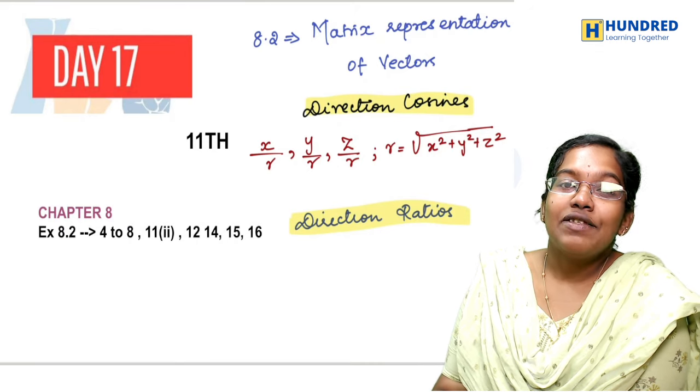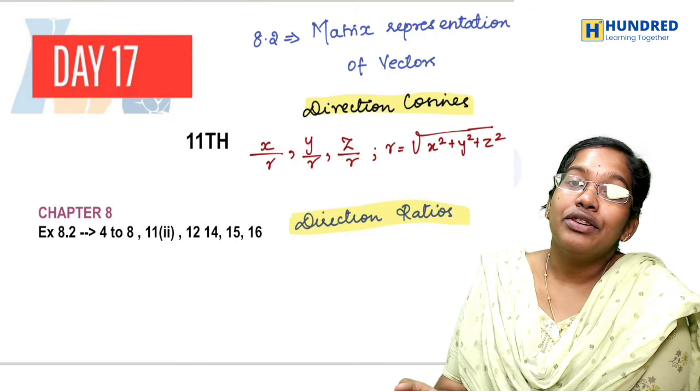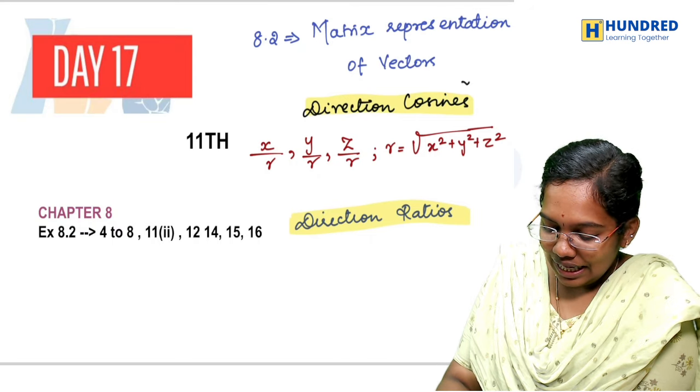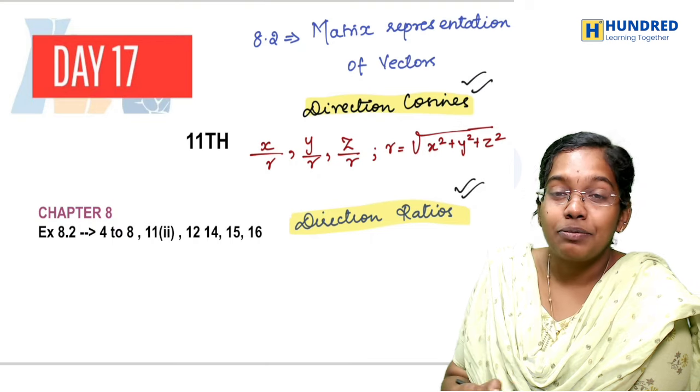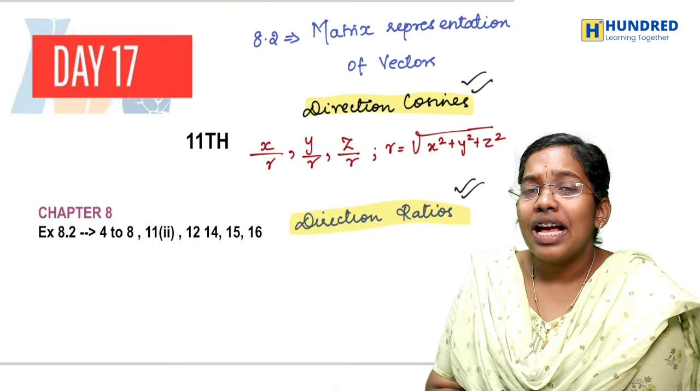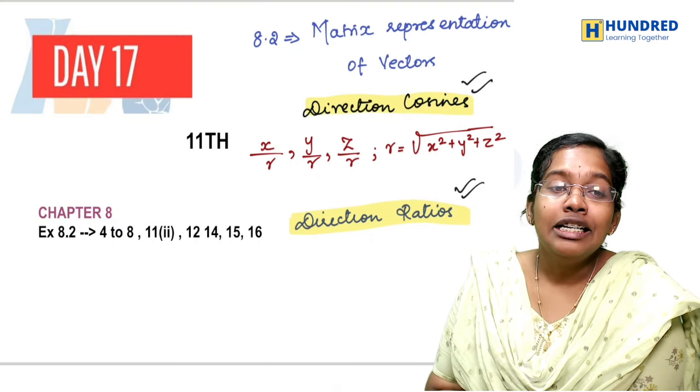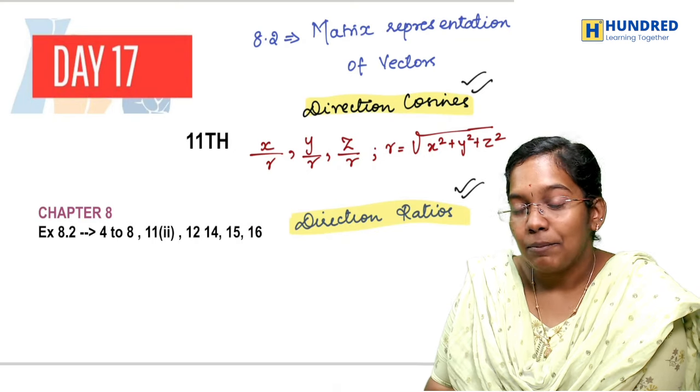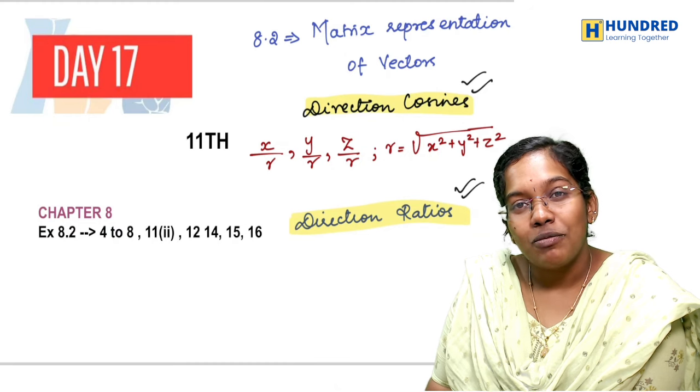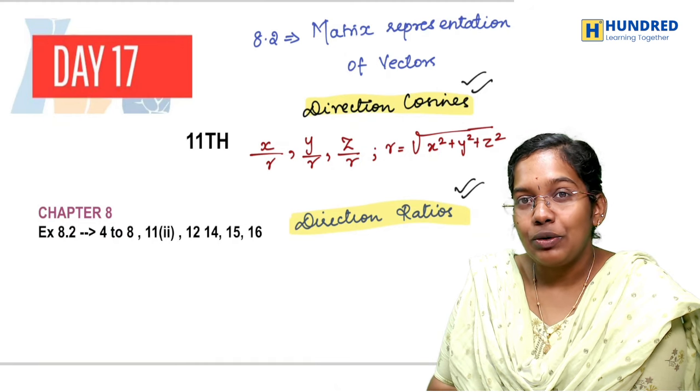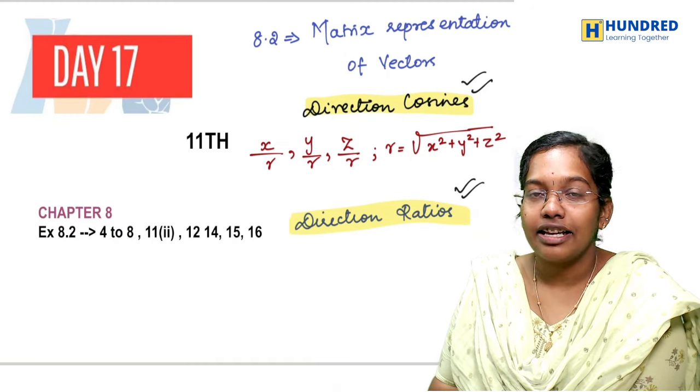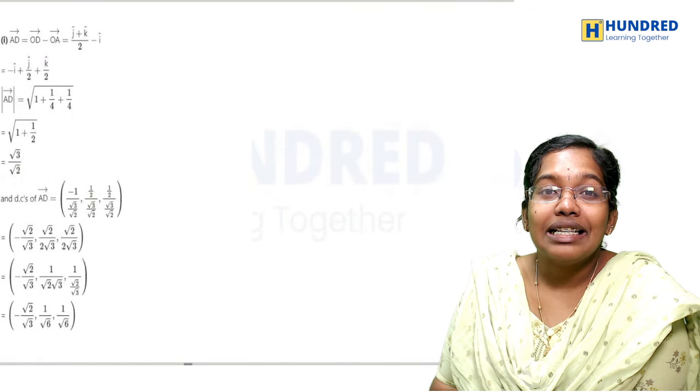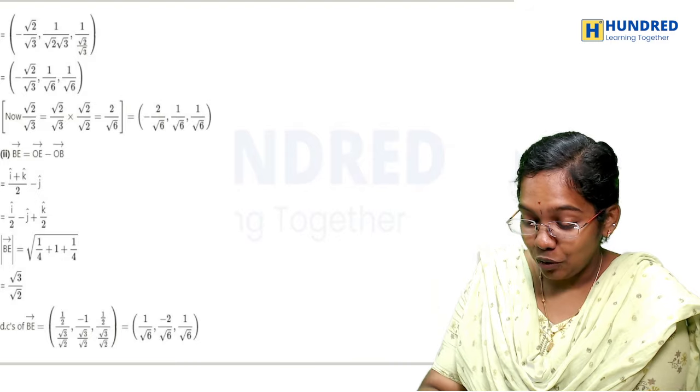11th Standard Students Day 17, you will see 8.2 matrix representation of vectors. These are the basic things you have to know about vectors. You will find this formula. Daily formula sheet, you will find out how to maintain this formula sheet. Now in the video, you will finish these 10 sums.